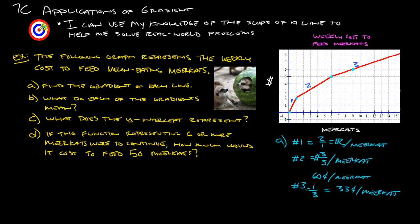And then the last one here, if the function representing six or more meerkats were to continue, how much would it cost to feed 50 meerkats? So as you can see, it only goes up to 15. 50 meerkats is going to be way over there. So we're going to actually have to figure out what the equation of this line is.